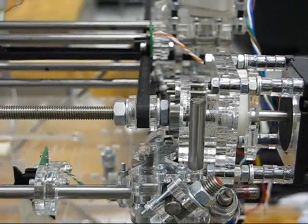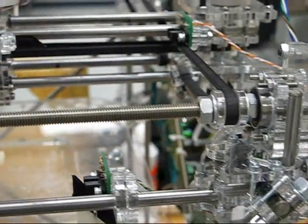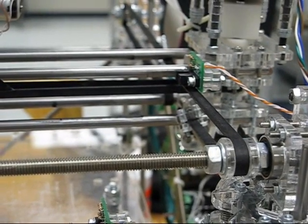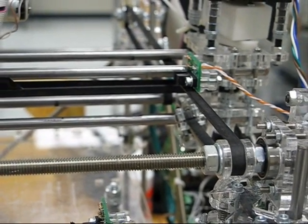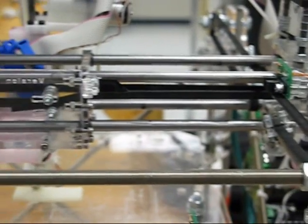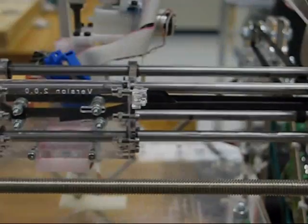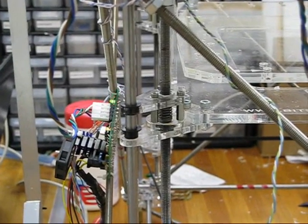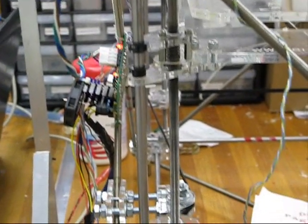It is primarily driven off a belt drive system, which moves the carriage head back and forth and left and right. The Z-axis is actually driven off a screw drive, as you can see here.